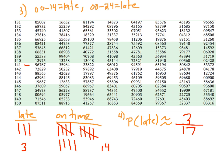The approximately equal symbol is really, really super important. That's probability through simulation.